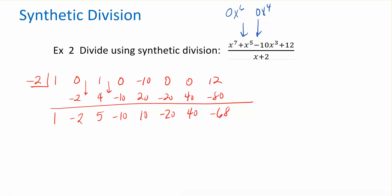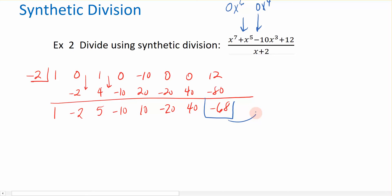For this synthetic division, this last value is the remainder. In this case, because I don't end up with a 0, I have a remainder.